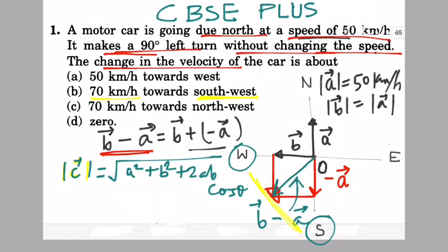You can check in my other video where I have discussed about how to add two vectors. What is a and what is b are the magnitudes of A and B which is already given, 50 km/h. What is θ here?